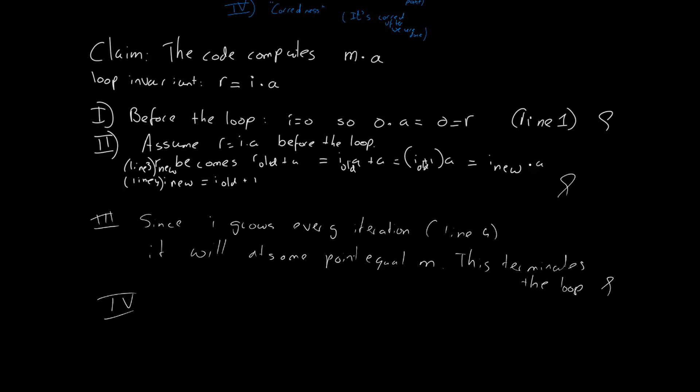Finally, step number four. After the loop is done, i will equal m, right? This was the eventual falsity of the guard. And, since after every iteration of the loop the invariant is true, we know that in the end the invariant must be true, but with i equal to m. Therefore, the final result is indeed m times a.